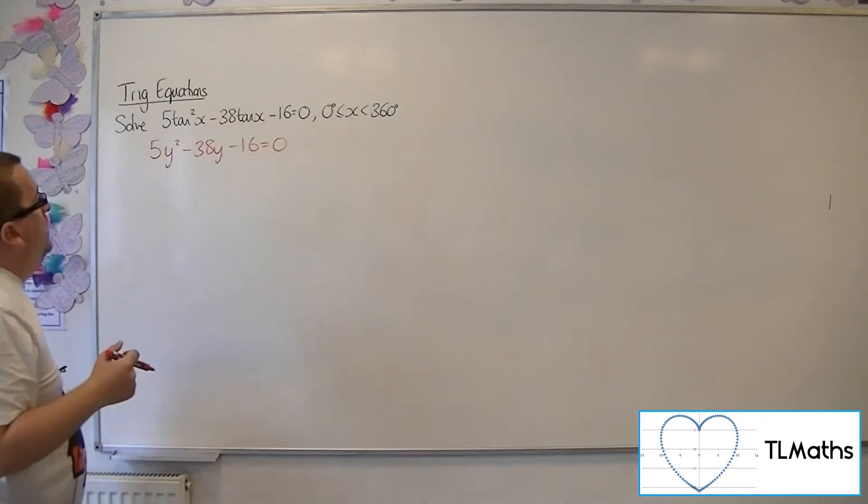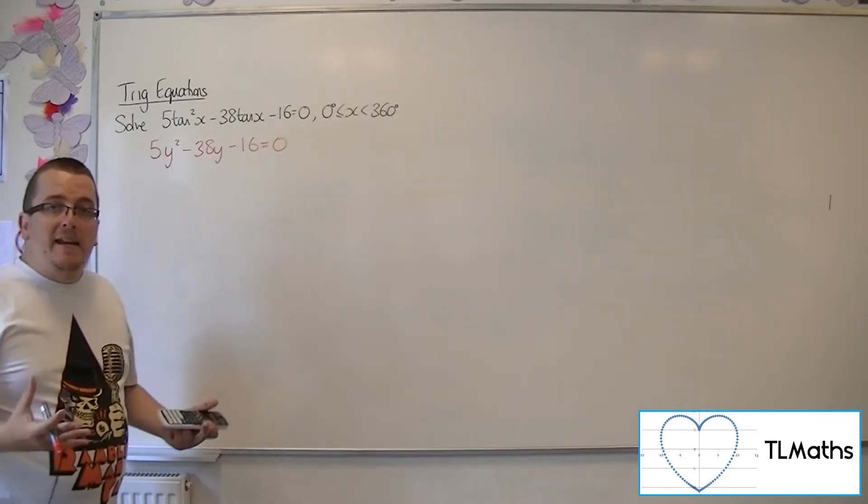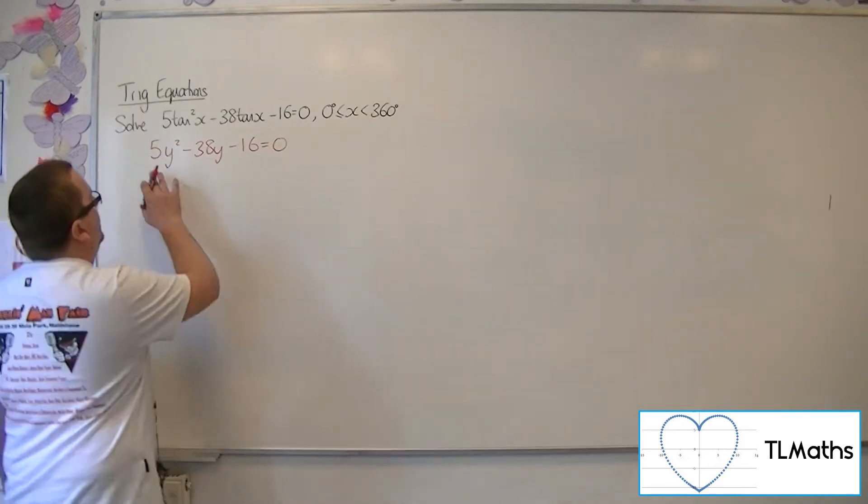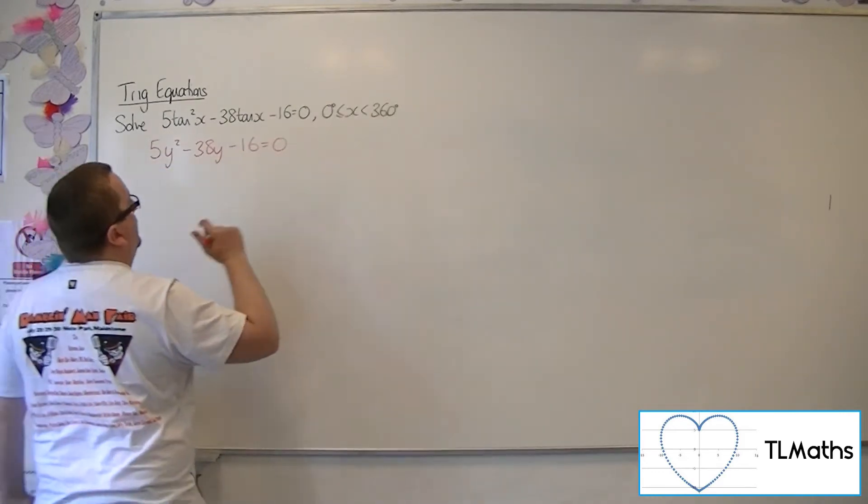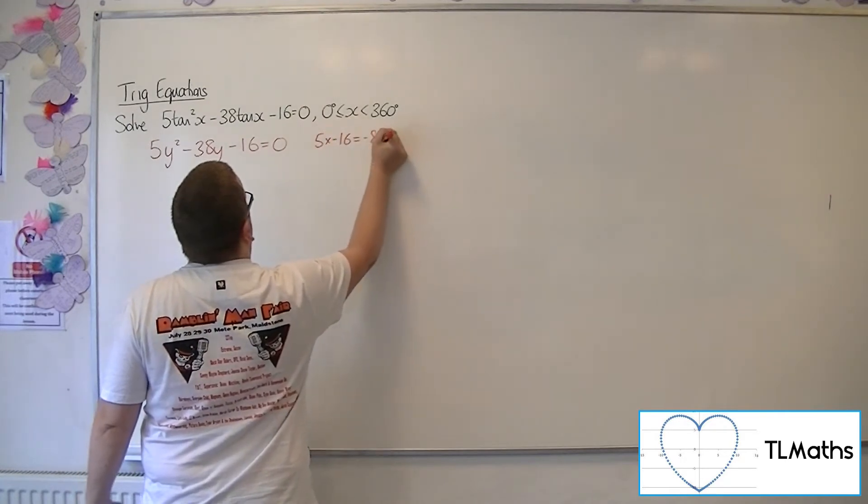So 5y squared minus 38y minus 16 equals 0. If it's not one that you can immediately see, then you might want to go ahead and go, well, 5 times minus 16 is equal to minus 80.